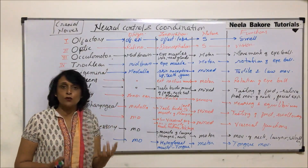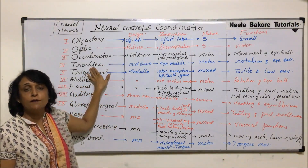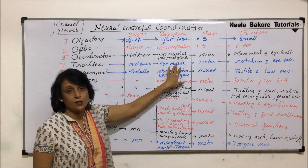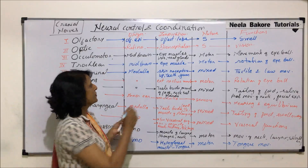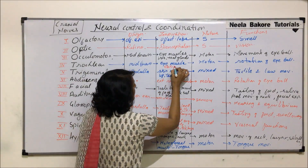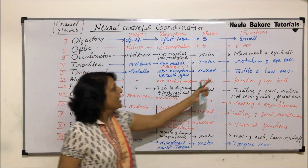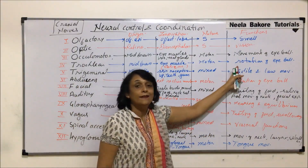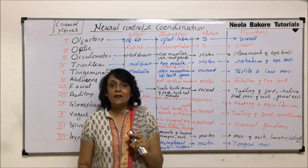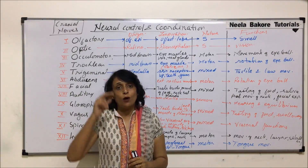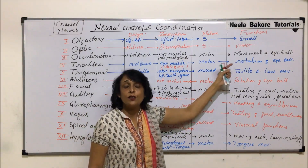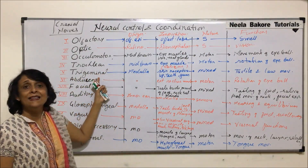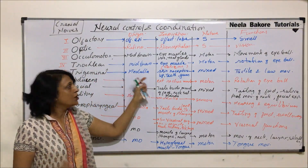The fourth one is trochlear, also known as pathetic. It also arises from the midbrain and goes to the oblique eye muscles. The oblique eye muscles help in rotation of the eyeball. So while the superior, inferior, internal, and external rectus muscles handle up, down, and sideways movement, trochlear controls rotation of the eyeball.